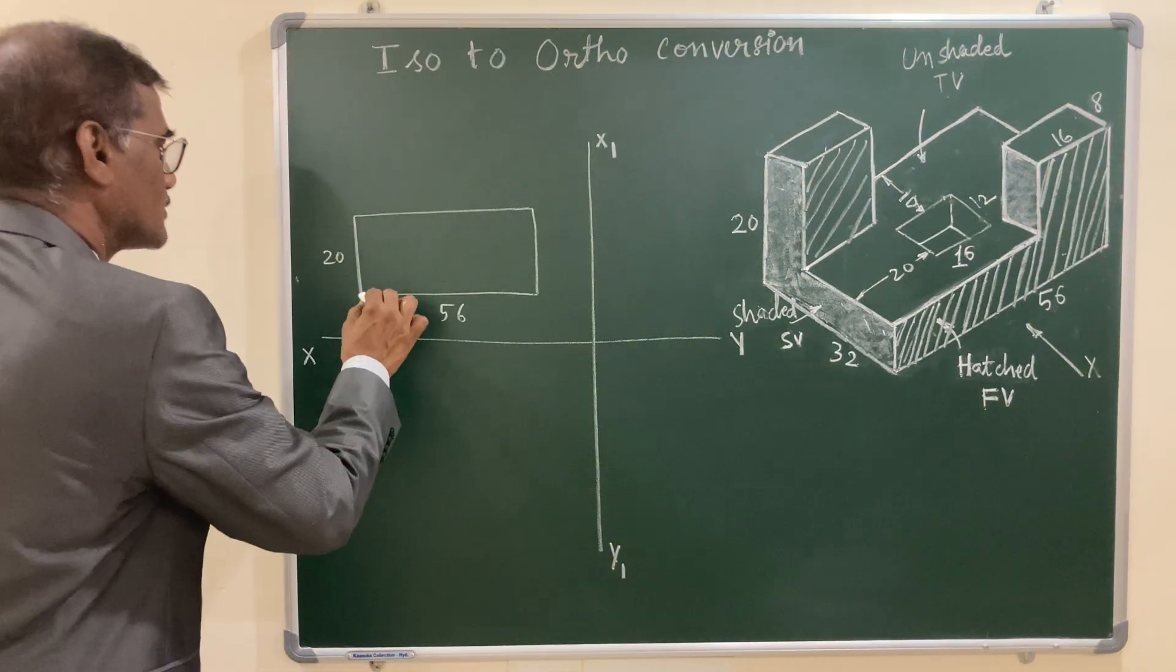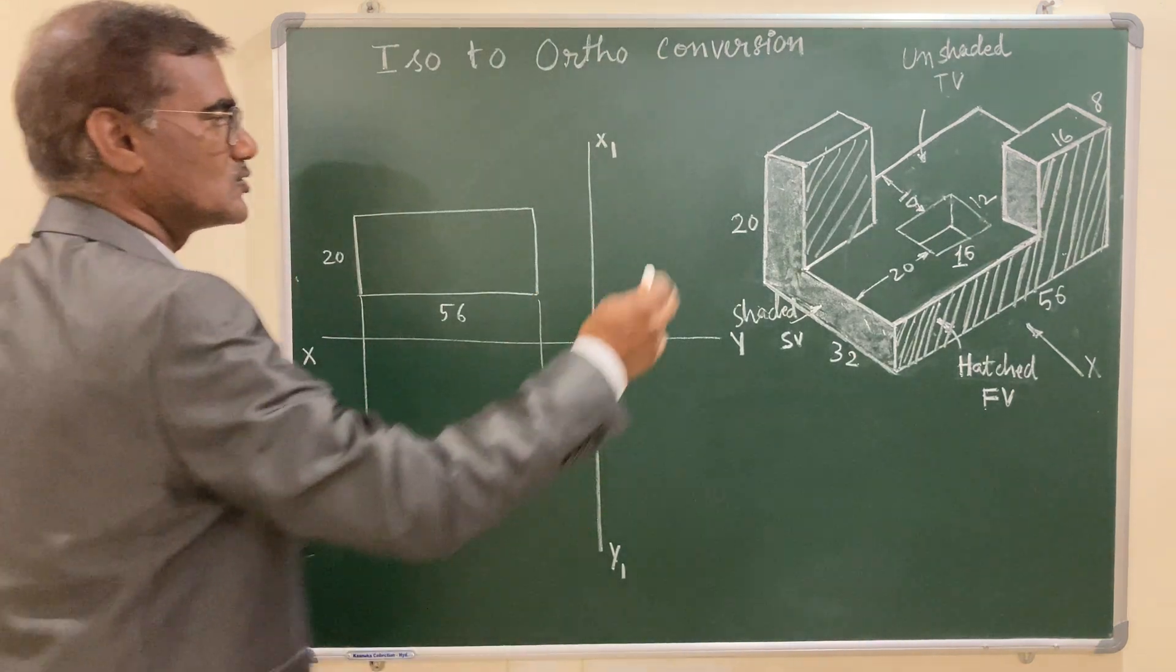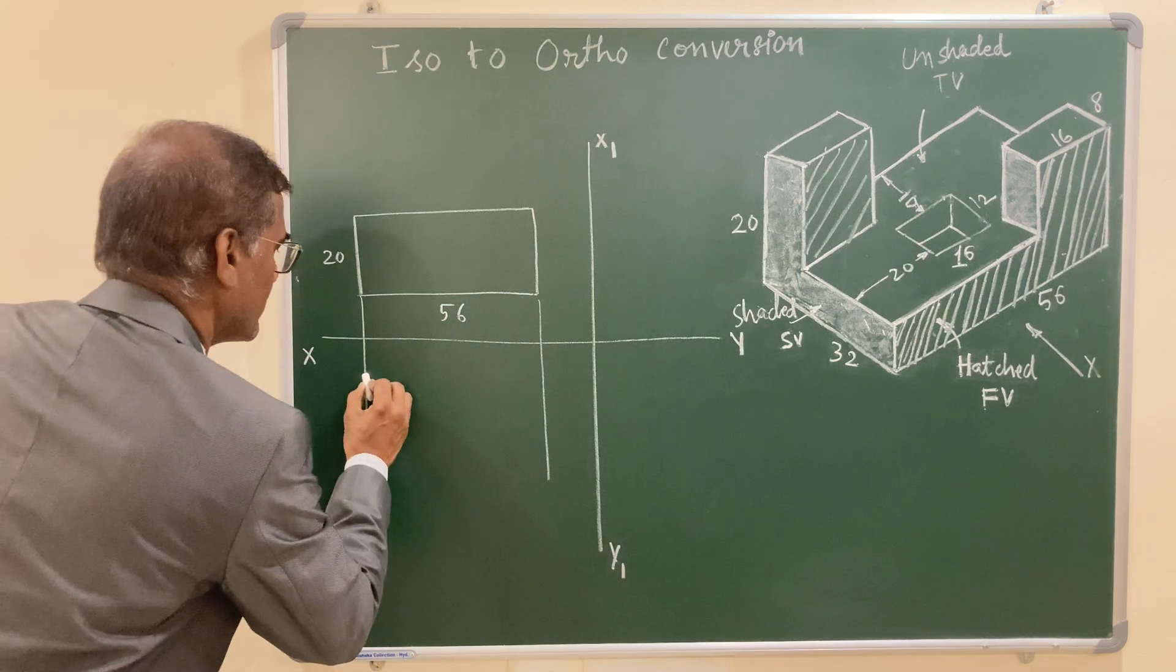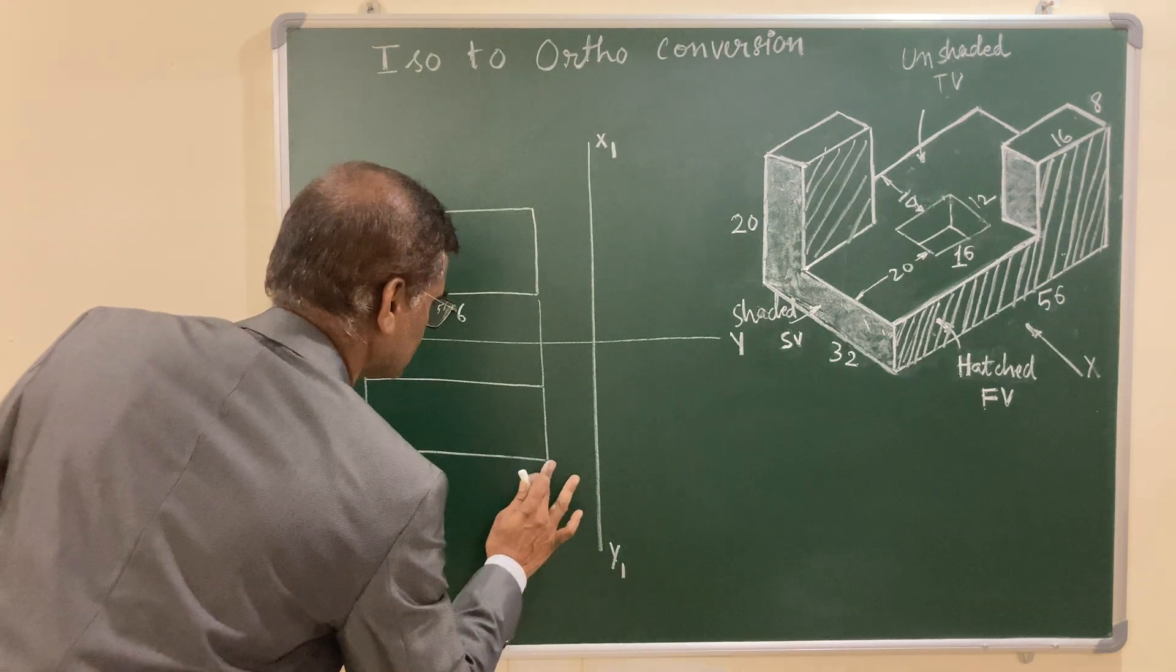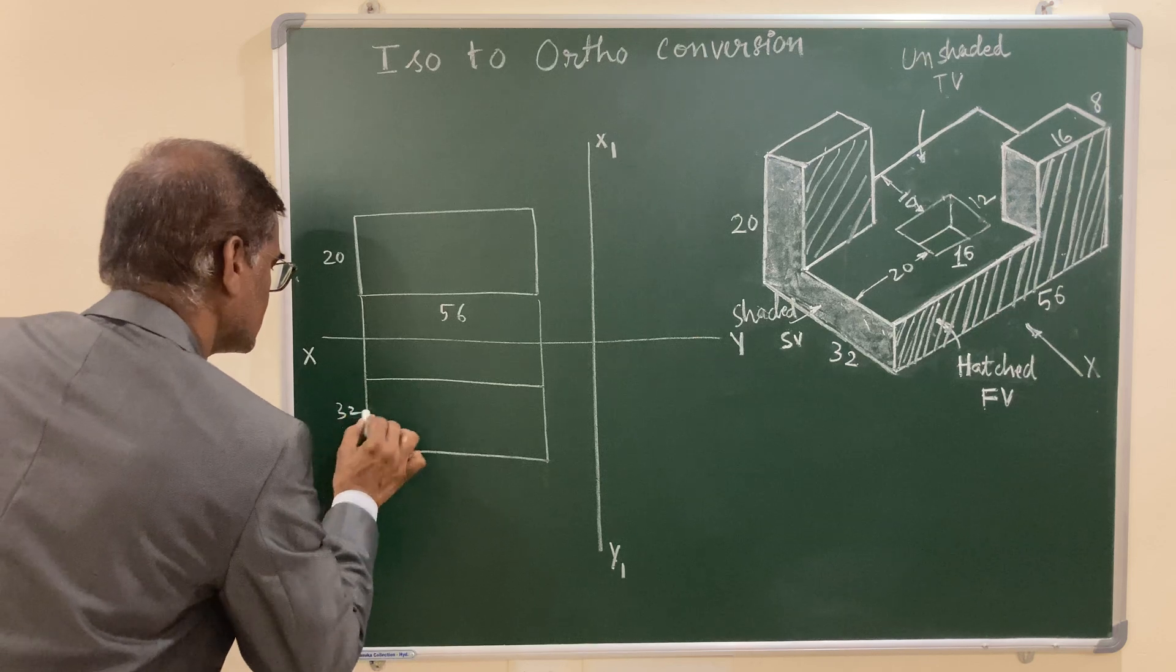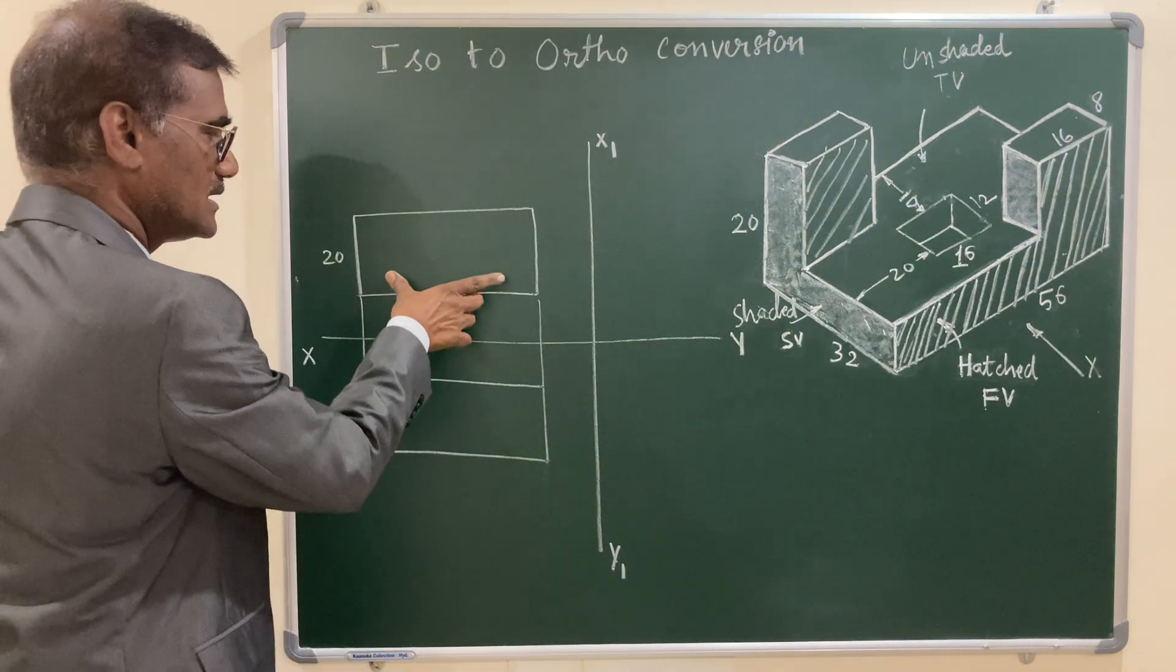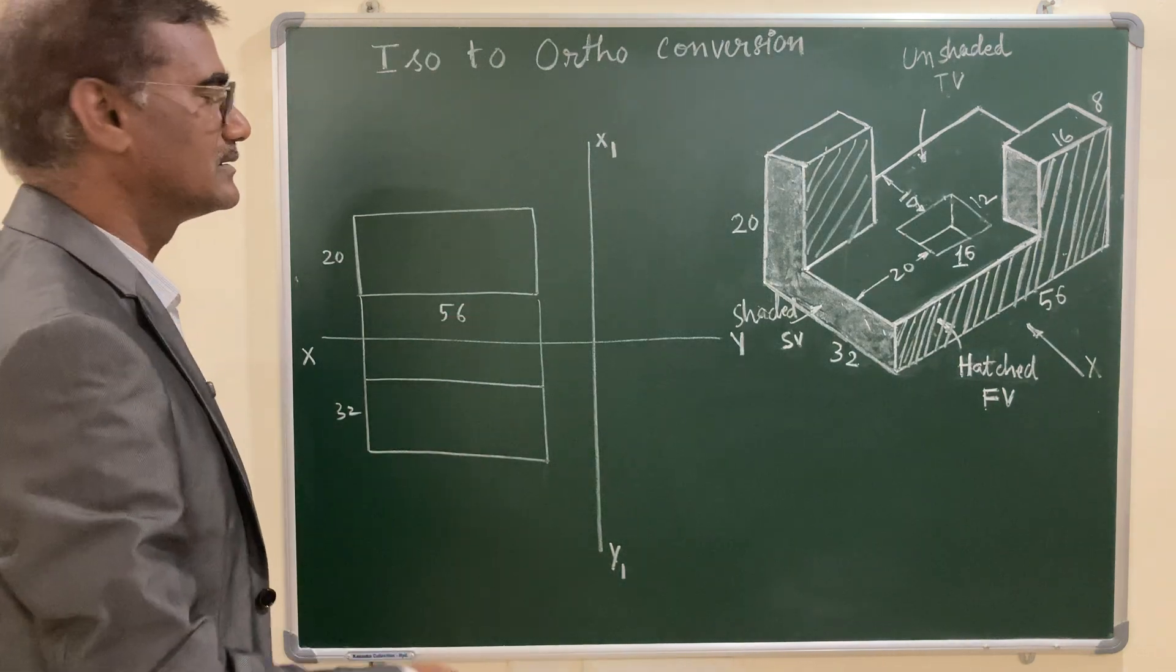Let us draw the projectors. And in top view, the length remains same and width is 32 mm. You can mark 32 mm. This is 32. So you need not mark dimension in top view because this width remains same, which you have mentioned as length. Length remains same.